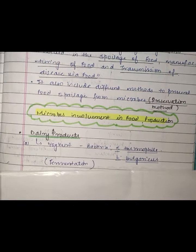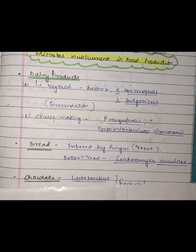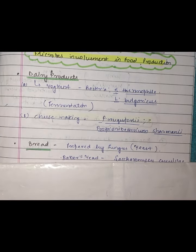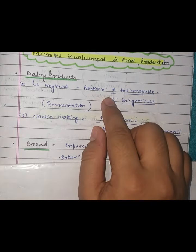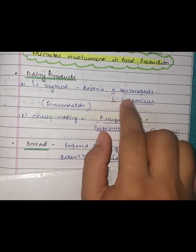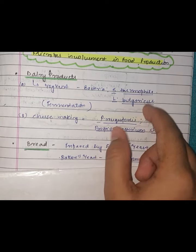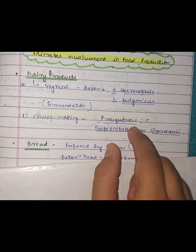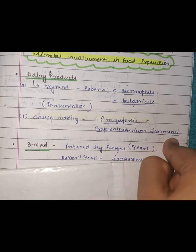Now let's talk about microbe involvement in food production. For dairy products, yogurt is generally produced by fermentation through bacteria like Streptococcus thermophiles and Lactobacillus bulgaricus. For cheese making, bacteria like Penicillium roqueforti or Propionibacterium shermanii are involved.